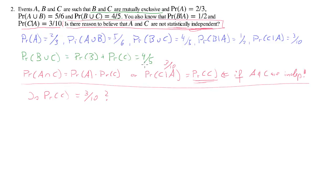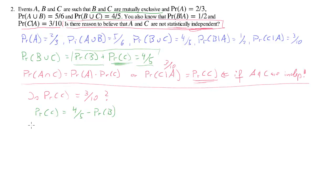Looking at the mutual exclusivity equation — the green relationship — we have the probability of C there, which is what we want. That equation implies that if we know the probability of B, then we can determine the probability of C, because the probability of C equals four-fifths minus the probability of B. So we need to find the probability of B, and then we can compare the result.